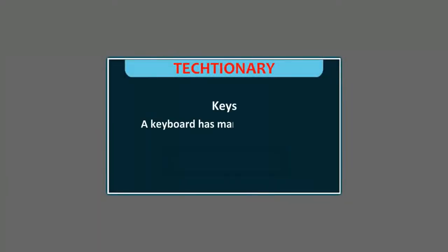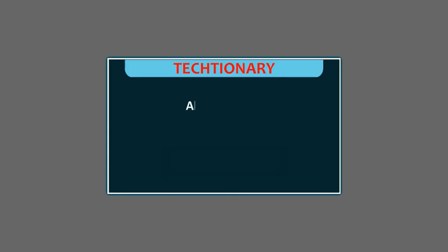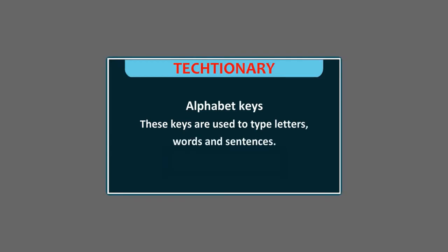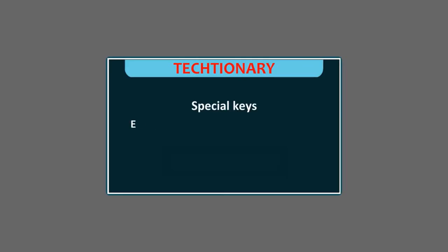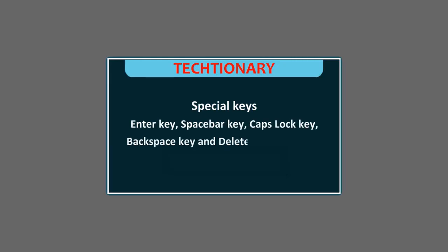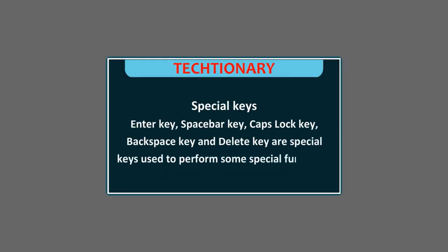A keyboard has many buttons on it, which are called keys. Alphabet keys are used to type letters, words and sentences. Number keys are used to type numbers. Special keys — Enter key, Spacebar key, Caps lock key, Backspace key, and Delete key — are special keys used to perform some special functions.